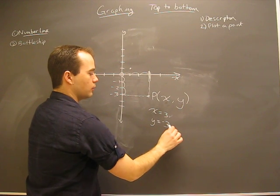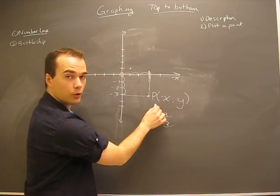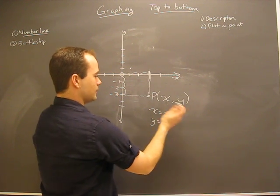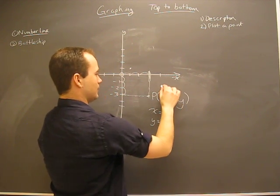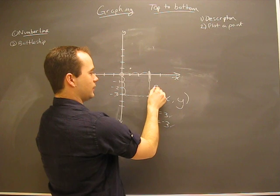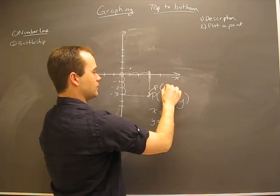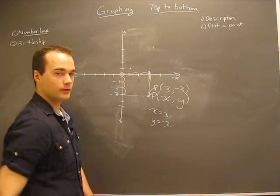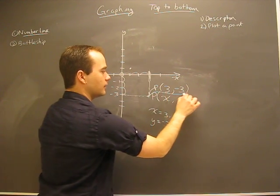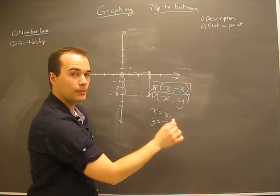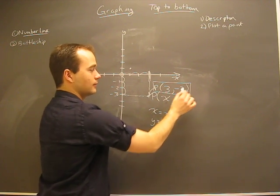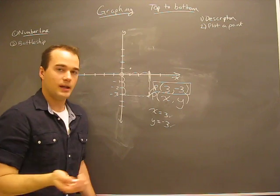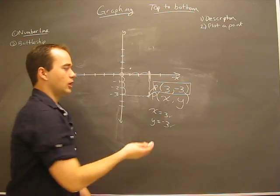So we know what x is, we know what y is. Therefore, our point — not P-x-y, but what it really is — is three comma negative three, in brackets. This is how to properly write it. You need the comma, you need the brackets, make sure to put the negative sign there. And this P is just a made-up letter — let's call it point P.